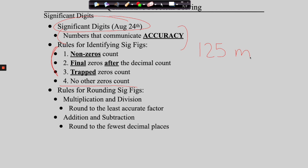Now, what if we put a zero on the end, making it 0.1250? This zero tells us important information — it tells us that we looked to the ten-thousandths place and did not find anything there. So this zero is telling us we tried to measure more accurately, and that more accurate measurement confirmed the previous measurement. So 0.1250 would be four significant digits — that is an example of rule number two: final zeros after the decimal point are significant.